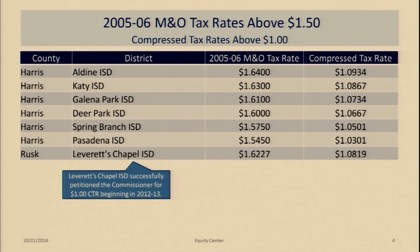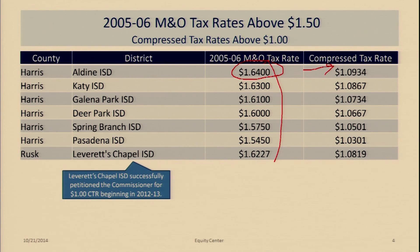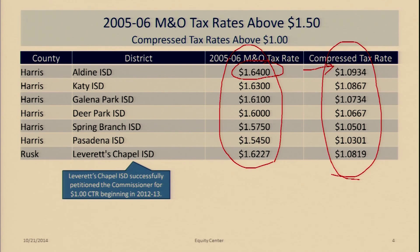Here are those six Harris County districts that had M&O tax rates above $1.50 in 2005-6, plus one small district in East Texas in Rusk County that also had an M&O rate above $1.50 due to a special circumstance. If you look at Aldine, its 2005-6 M&O tax rate was $1.64. Two-thirds of that is $1.0934, so its compressed tax rate was actually above $1.00. These are the M&O rates for those seven districts and what they compressed to.